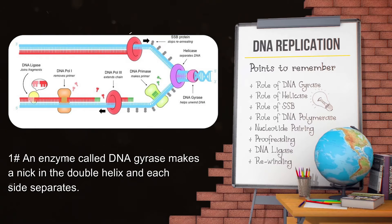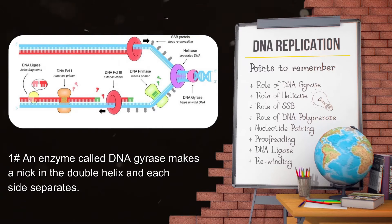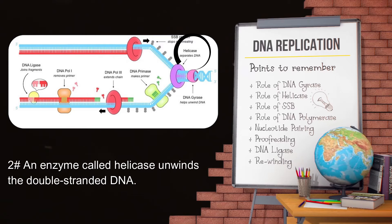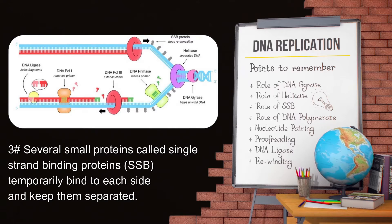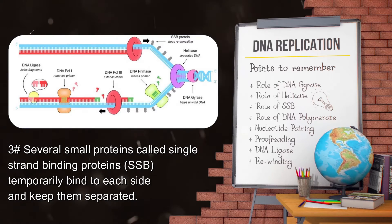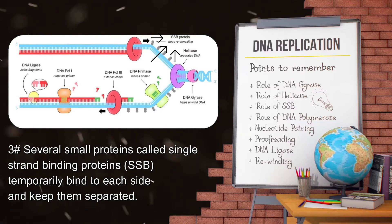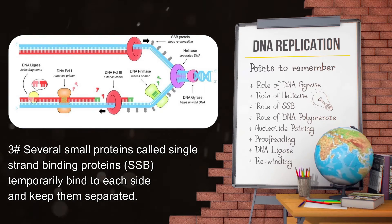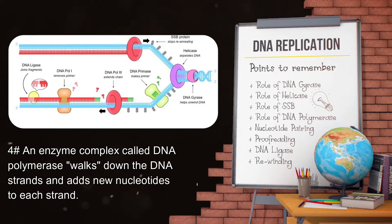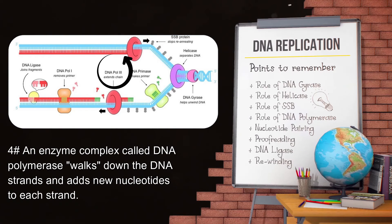In DNA replication, the following steps are involved. Step one: an enzyme called DNA gyrase makes a nick in the double helix and each side separates. Step two: an enzyme called helicase unwinds the double-stranded DNA. Step three: several small proteins called single-strand binding proteins temporarily bind to each side and keep them separated.